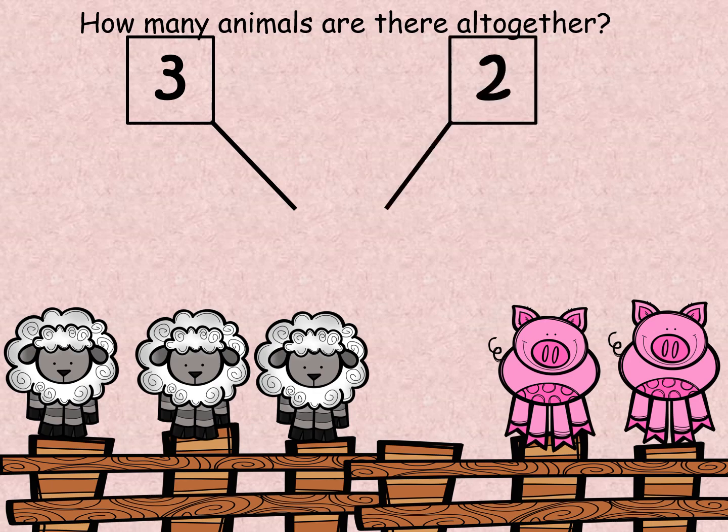How many animals are there all together? Let's start counting the animals by starting at the sheep. One, two, three, four, five. There are five animals all together.